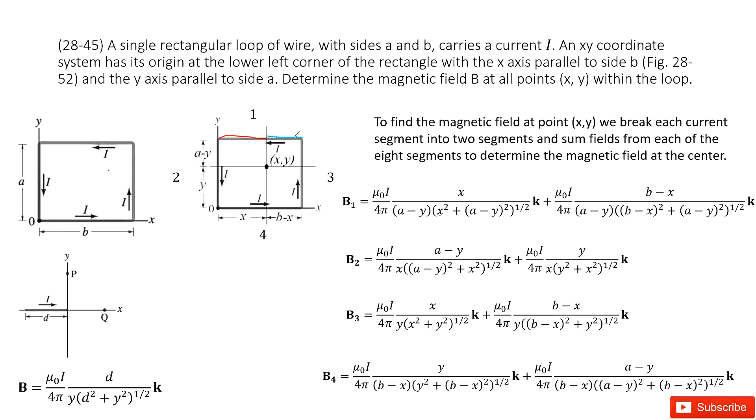Now we look at the blue part. For the blue part, similarly, the direction is k there. And also we can see the length for this blue part is b minus x. So we replace the d as b minus x. The distance above this wire is a minus y. So we replace y as a minus y. So this one, we get the magnetic field B1 in these equations.